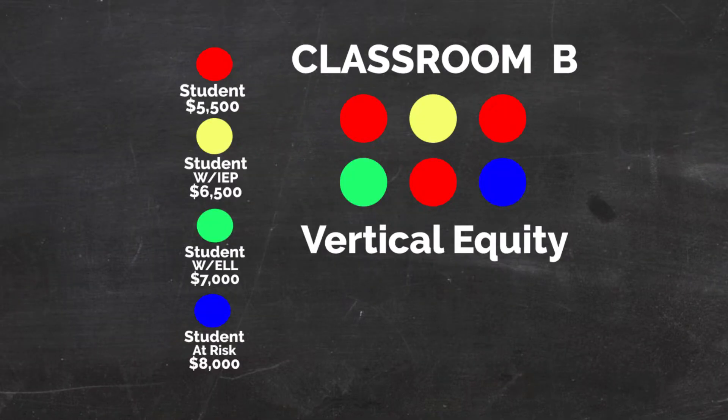Now let's talk about vertical equity. Vertical equity is ensuring that dissimilar students receive dissimilar funding. There are certain students in the Clark County School District that require more resources in order to get them to common educational outcomes. Those outcomes are things such as math, science, reading proficiency, and graduation — all of the things that we'd like for our students to achieve in the school year. Certain students will require additional resources to get there, and we want to ensure that they are provided those resources.